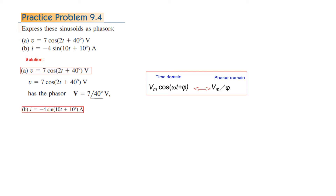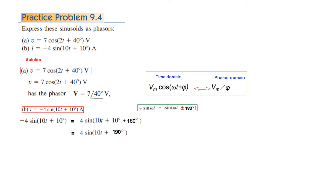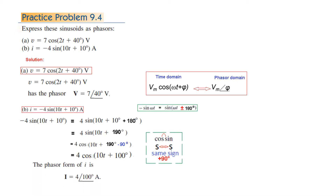The second part is slightly tricky because it is negative and also in sine form. First we take care of the negative by adding plus 180 degrees — you could also subtract 180 degrees. Solving this gives plus 190°. Now we convert from sine to cosine, which requires subtracting 90°. Solving gives cosine at 100°, and now we can write it in phasor form: I = 4 at angle 100°.